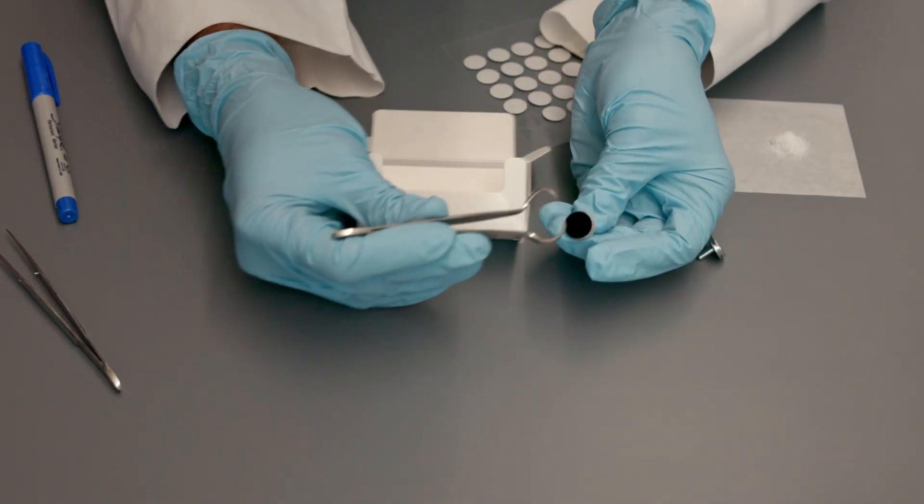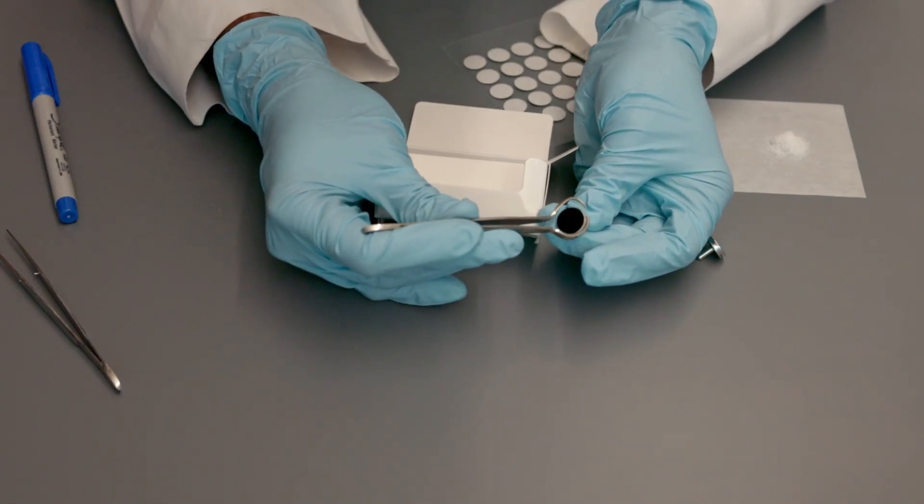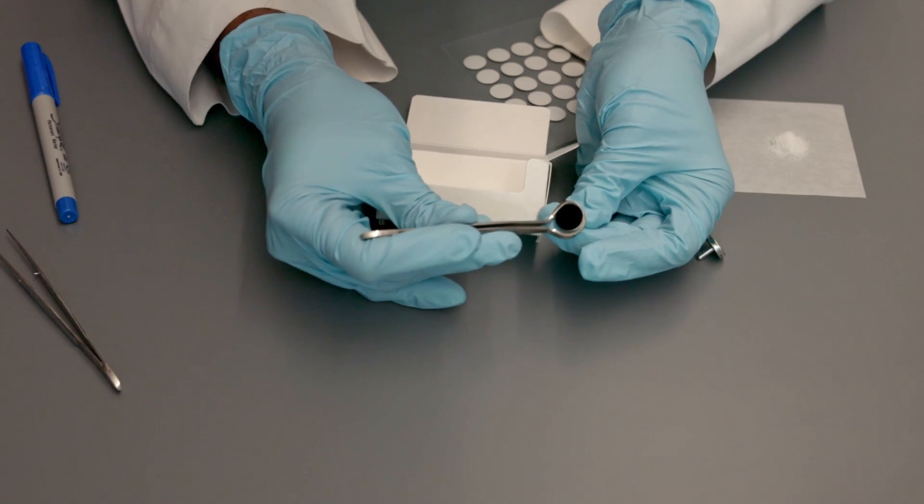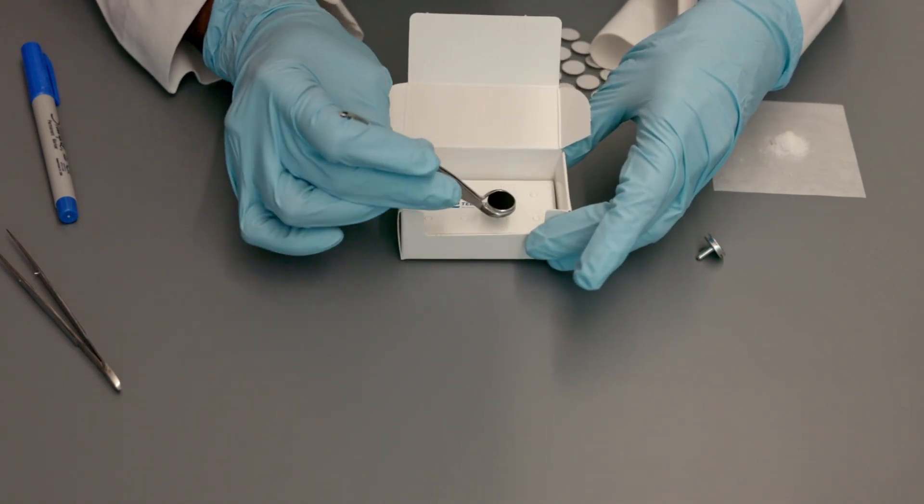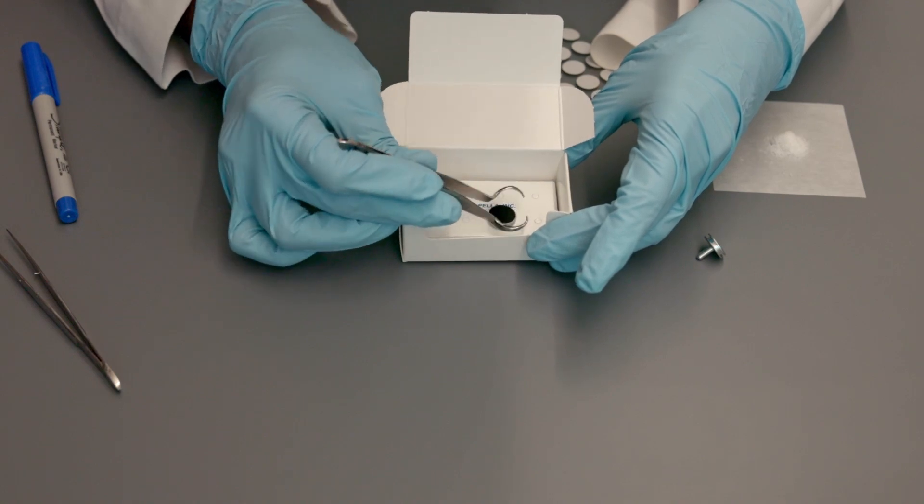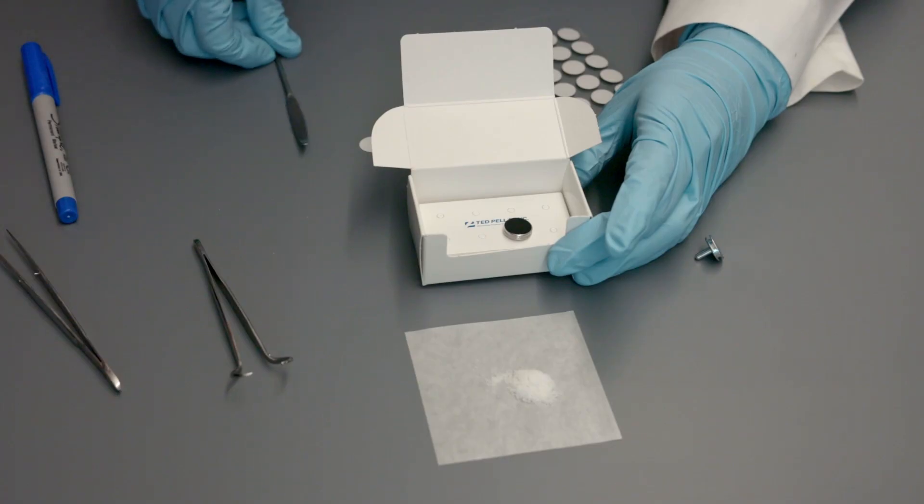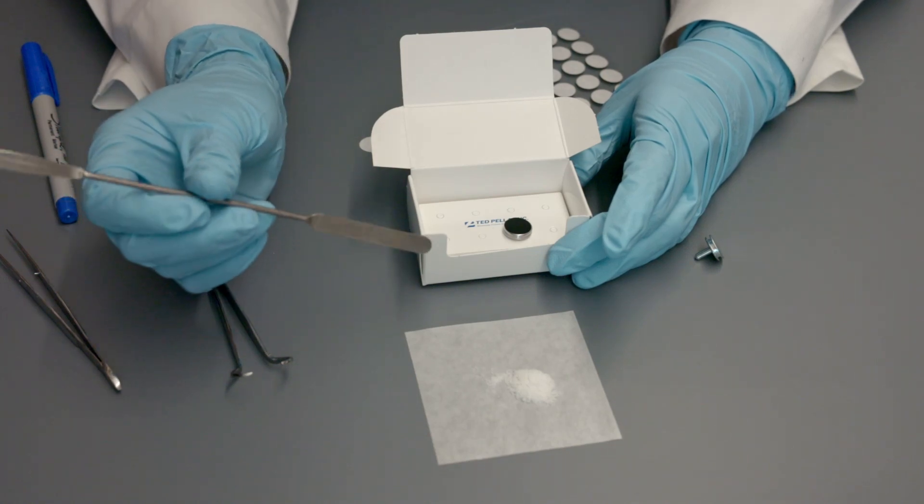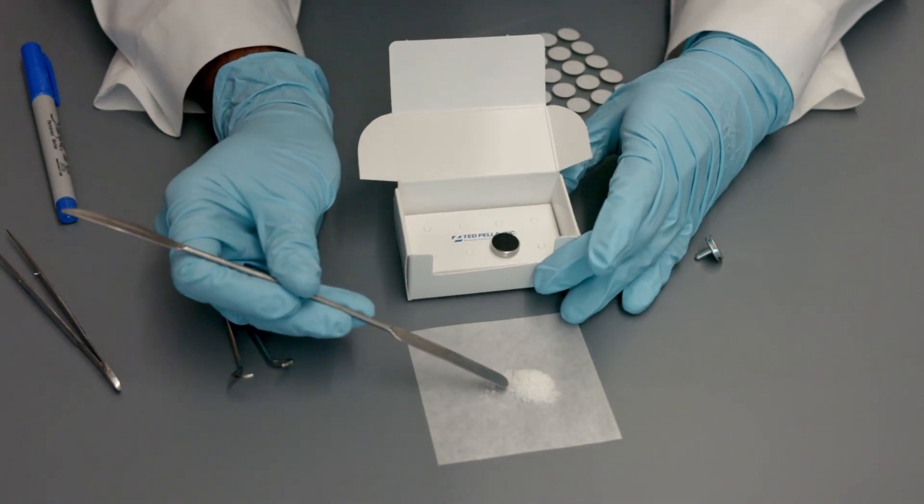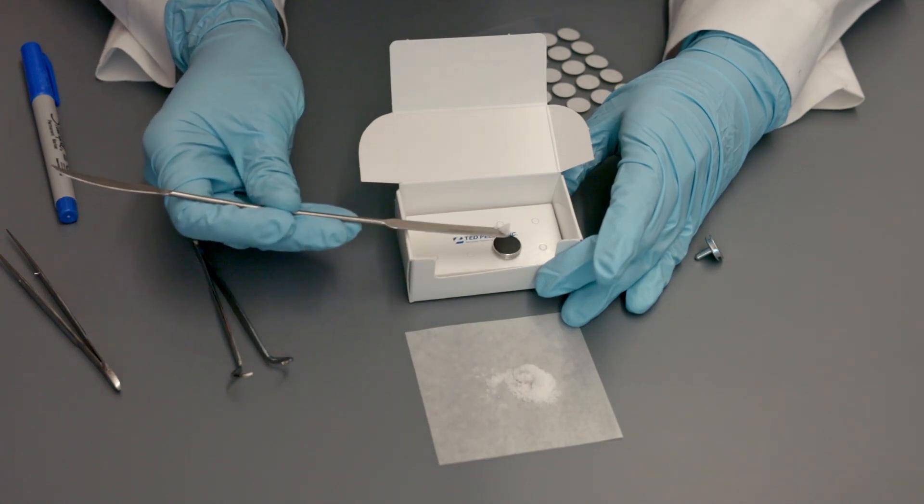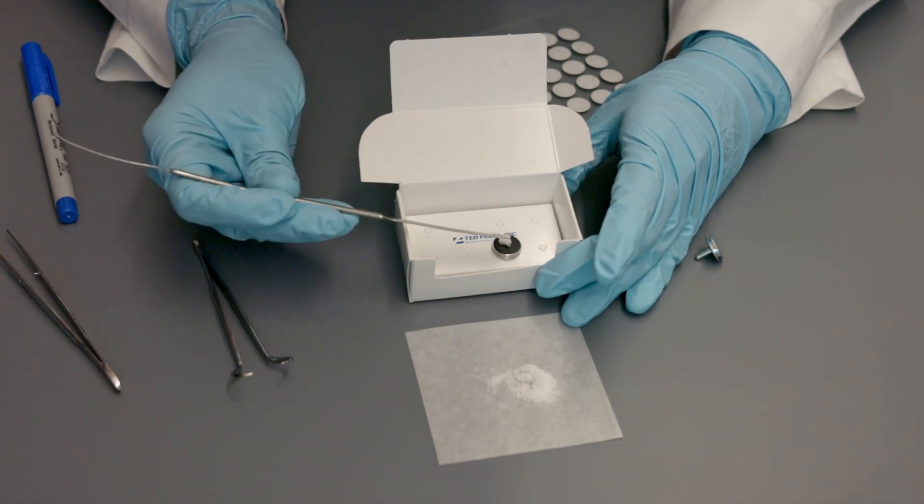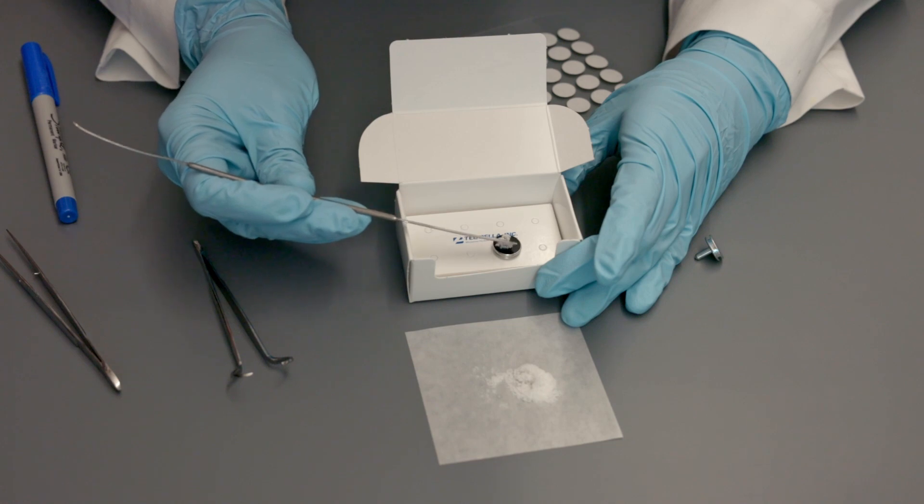Hold the mount using tweezers and place it on the insert. One of the samples we will be working with today is table salt. Using a spatula, add a small amount of sample on the mount and spread it.